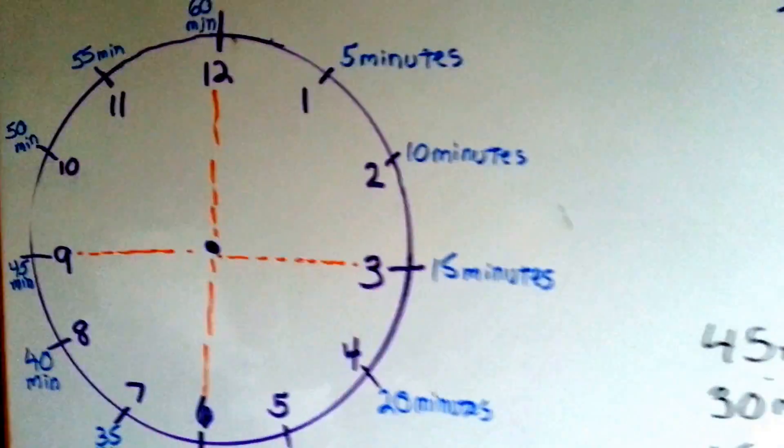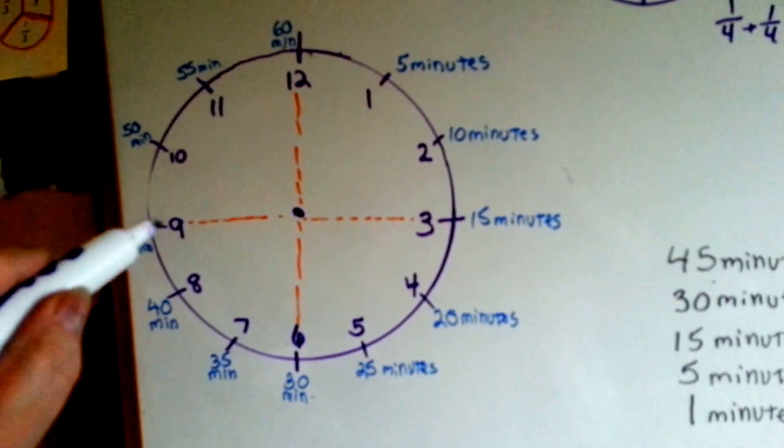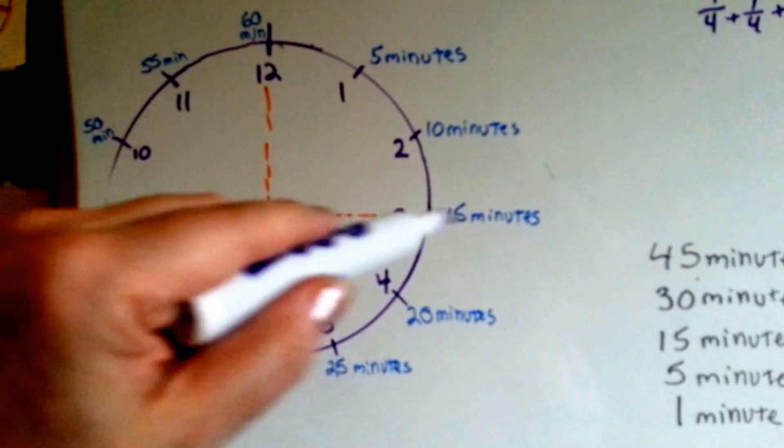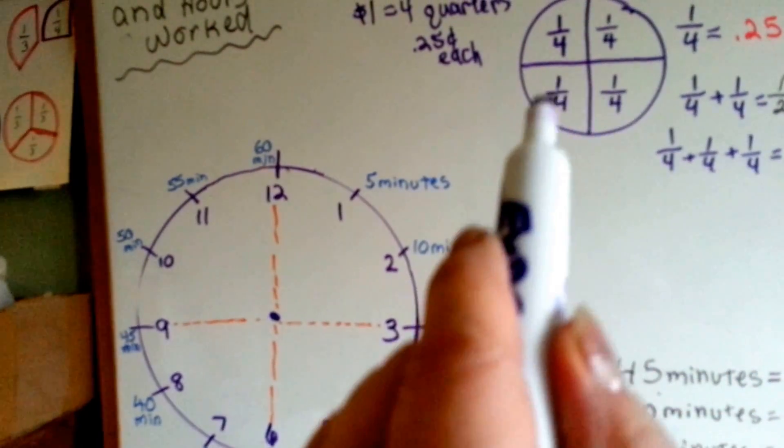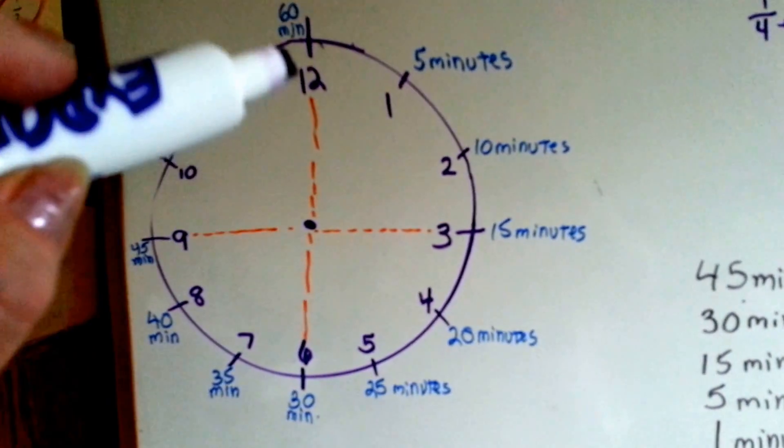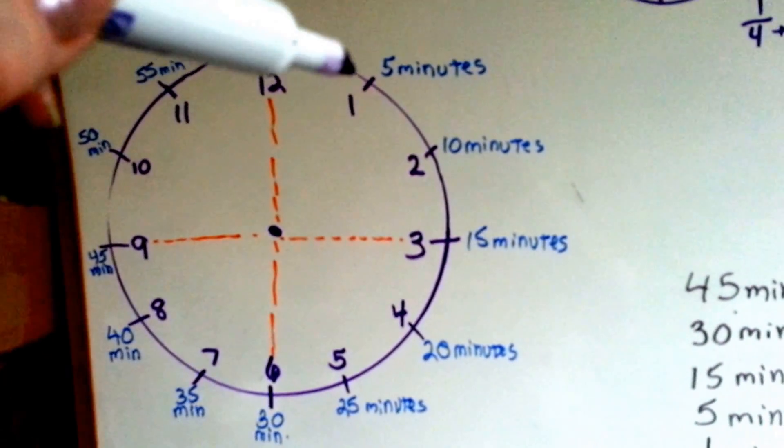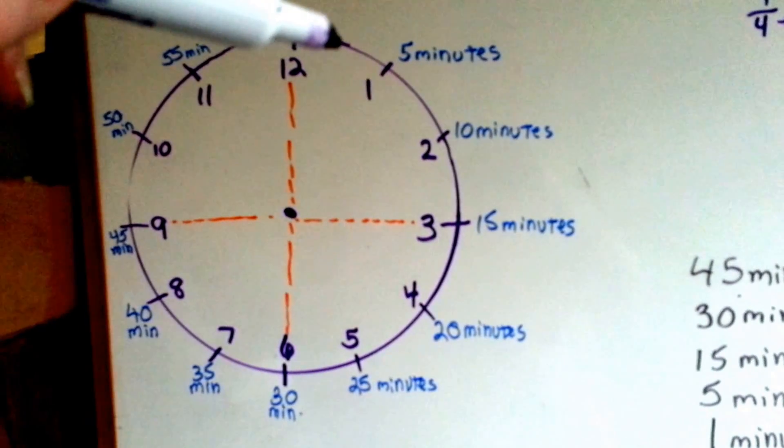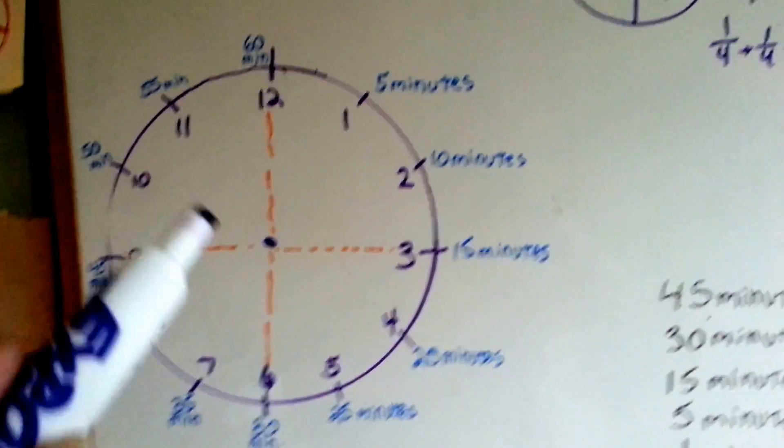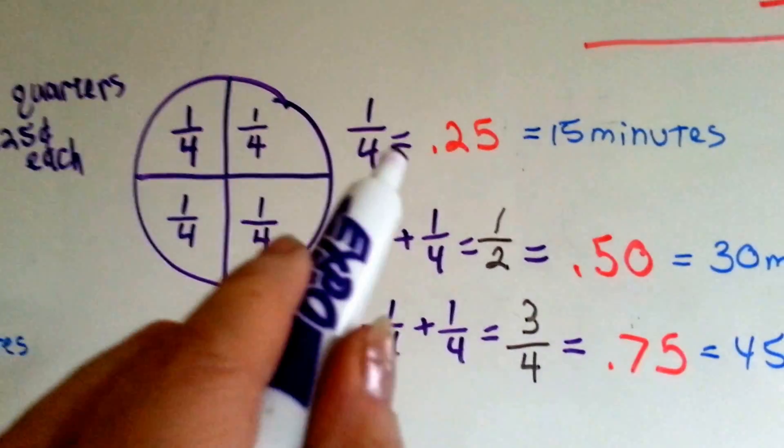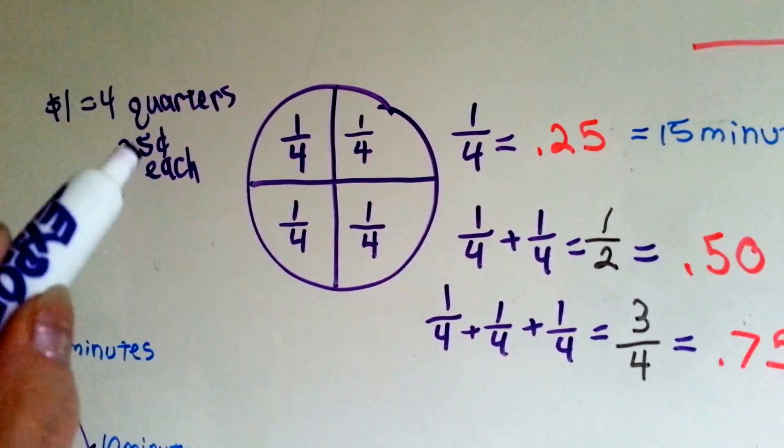When you look at a clock and you split the clock up into quarters, there's 15 minutes in each quarter. One-fourth, one-fourth, one-fourth, one-fourth. Anybody who knows how to tell time on a clock knows that each number represents 5 minutes. So each one of these is .25 because a quarter is equal to .25. You know, in a dollar there's four quarters, they're each .25 cents each.